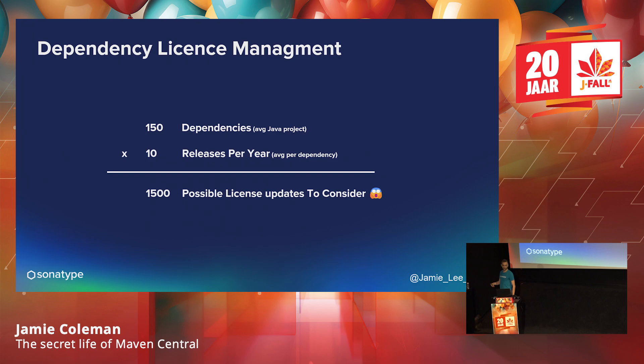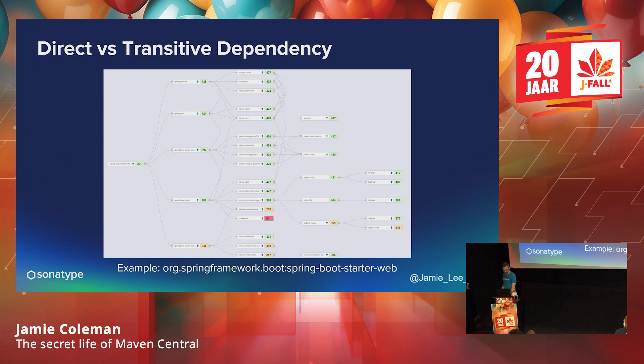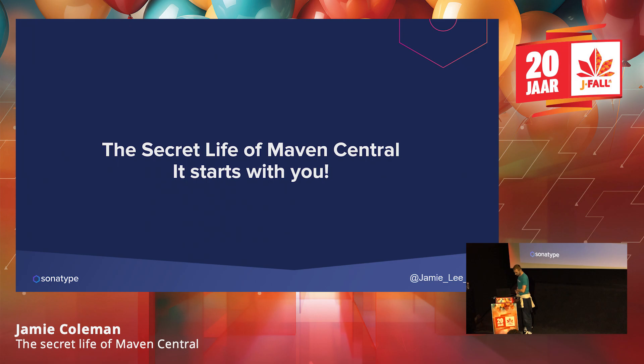That's great because it means we don't have to rewrite stuff that's already there. Imagine how much it would stifle innovation if we had to write all the dependencies and functionality we take for granted today. But there are issues. For an average Java project there are 150 dependencies, and those dependencies will have roughly 10 updates a year — so we have to consider 1,500 updates a year. It's mundane and boring, so it's something we'd like to automate.